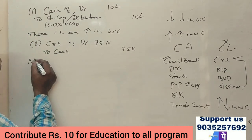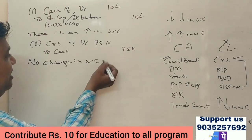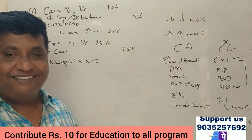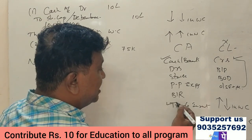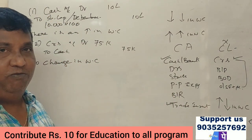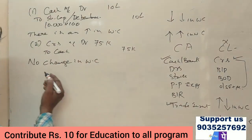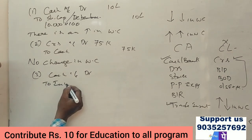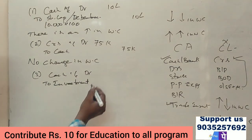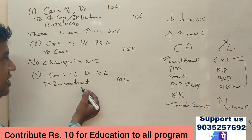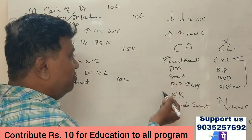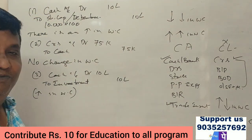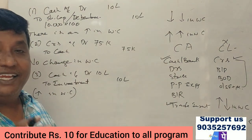Third question: Long-term investment sold for ₹10,00,000. Journal entry: Cash account debit to investment account. Long-term investment is a non-current asset, but cash received is a current asset. Therefore, this results in an increase in working capital.